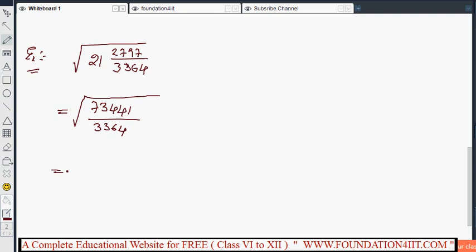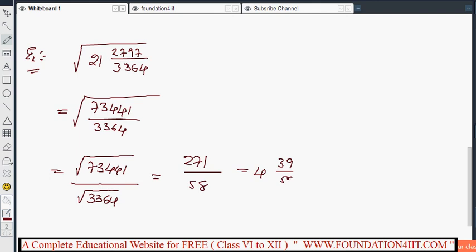Then we have to do the square root separately. Square root of 73441 by square root of 3364. By using division method, if you apply, we'll get the answer. This is 271 by 58. Again convert into mixed fraction by doing division: 4 and 39 by 58.